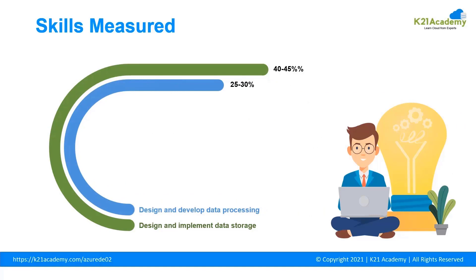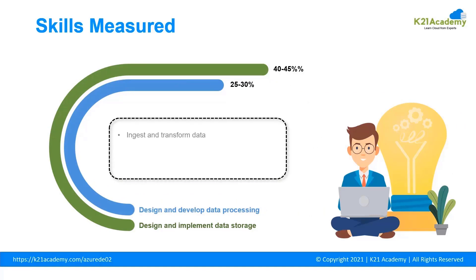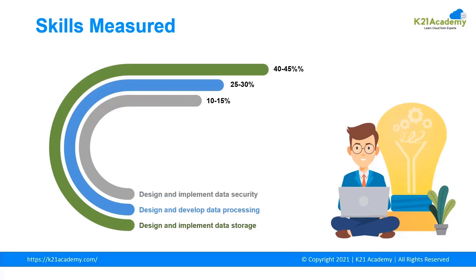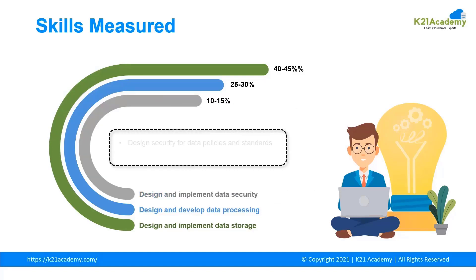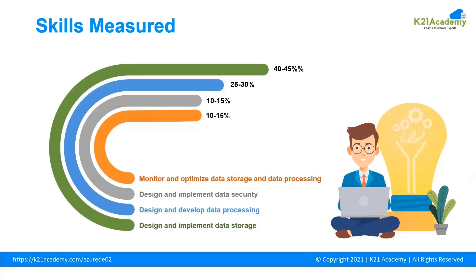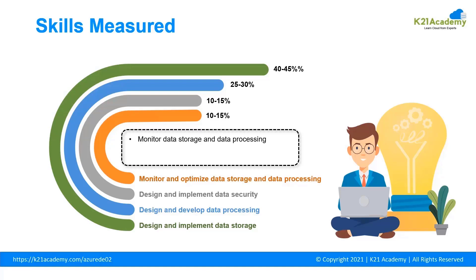Topics under design and implement data processing include: ingest and transform data, design and develop a batch processing solution, design and develop a stream processing solution, and manage batches and pipelines. Topics under design and implement data security include: design security for data policies and standards, and implement data security. Topics under monitor and optimize data storage and data processing include: monitor data storage and data processing, and optimize and troubleshoot data storage and data processing.